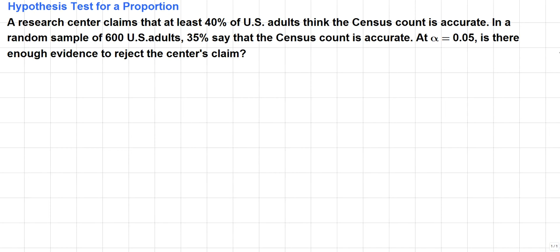In a random sample of 600 U.S. adults, 35% say that the census count is accurate. At alpha equals 0.05, is there enough evidence to reject the center's claim?